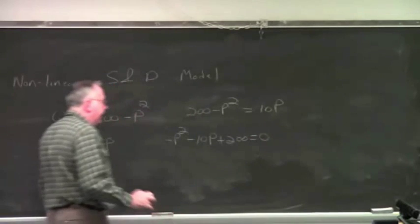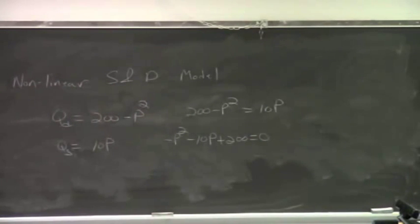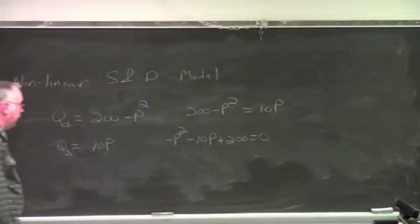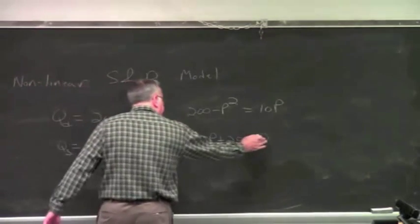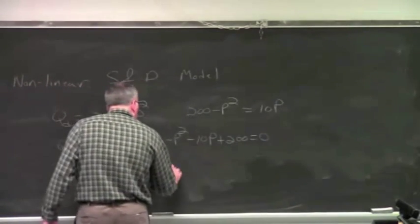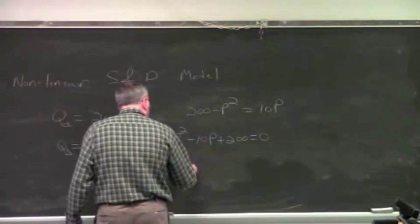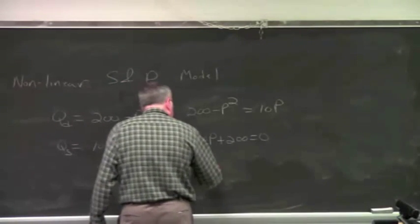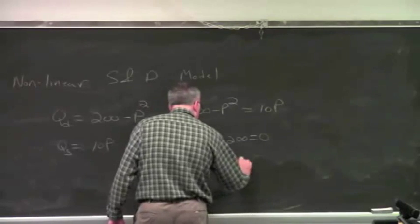And I don't like that minus sign on P squared, so I'm going to multiply both sides of this by minus 1. Since this is a 0 over here, you can do that. So then we get P squared plus 10P minus 200 equals 0.